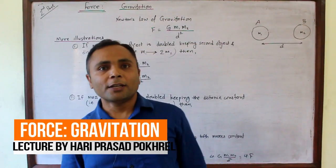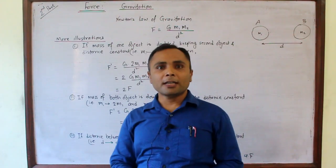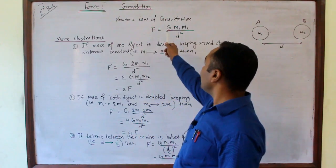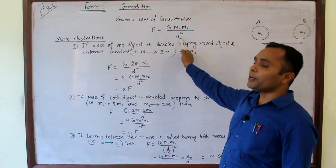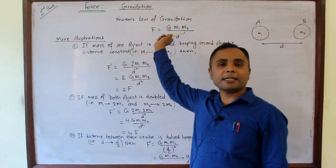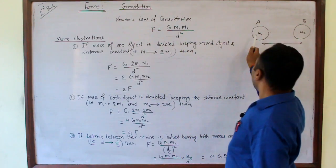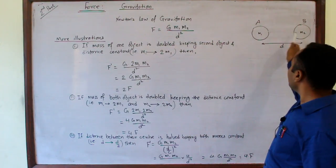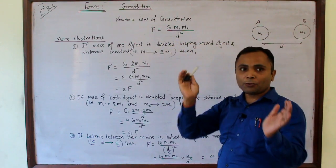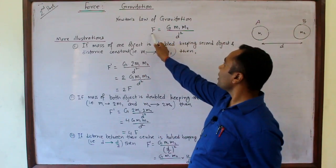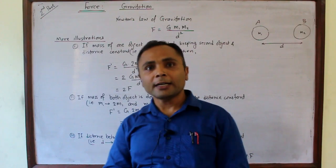Dear students, in last class we had learned about gravitation and Newton's law of gravitation. We had derived F = GM1M2/D² as the mathematical representation of gravitation. Two bodies of mass M1 and M2 separated by distance D are attracted towards each other by this force F = GM1M2/D².